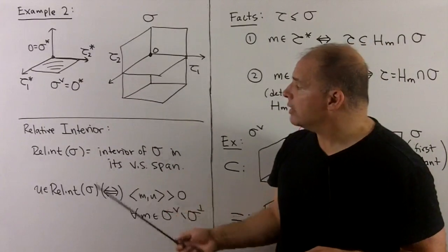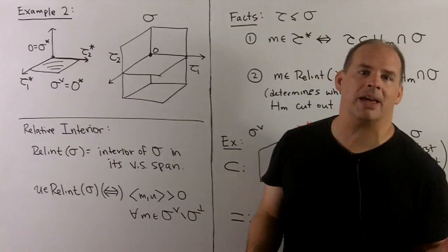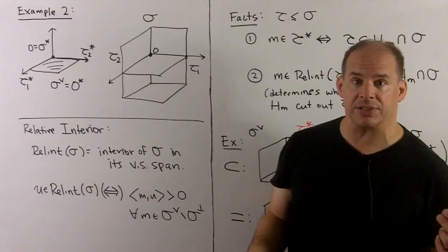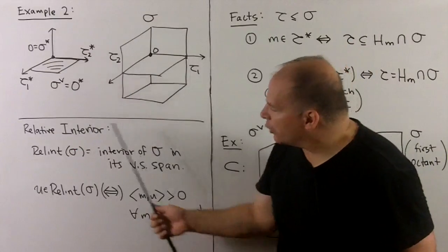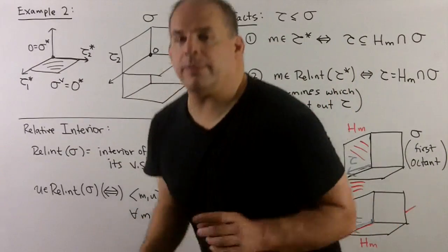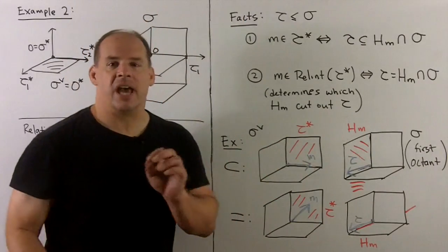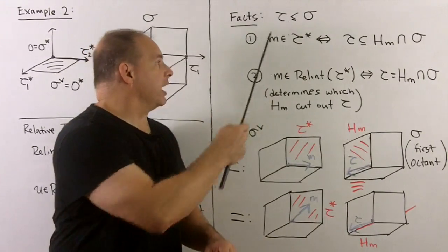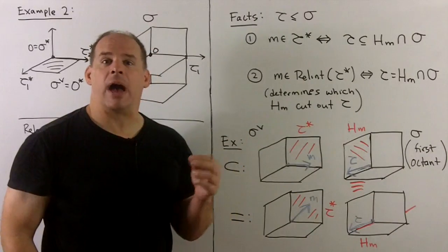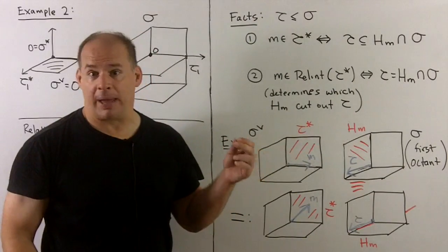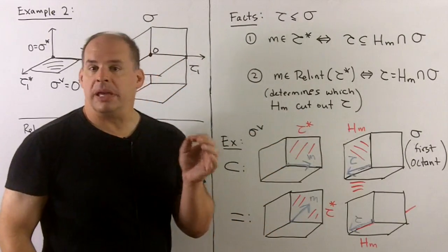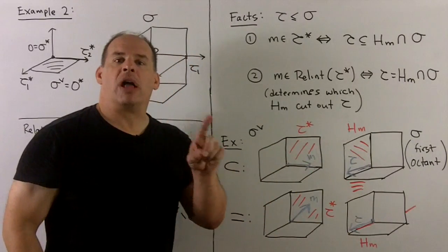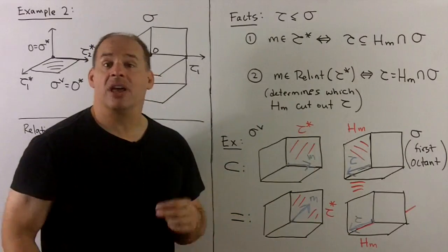Next, the notion of relative interior. The relative interior of sigma is the interior of sigma within its vector-space span — we take sigma and throw away all lower-dimensional faces. We give the mathematical formulation of relative interior, and from that we get the following fact: if tau is a face of sigma, then m is in tau-star if and only if tau is contained in sigma intersected with the hyperplane H_m. To be in the relative interior, we use the same condition but replace inclusion with equality.